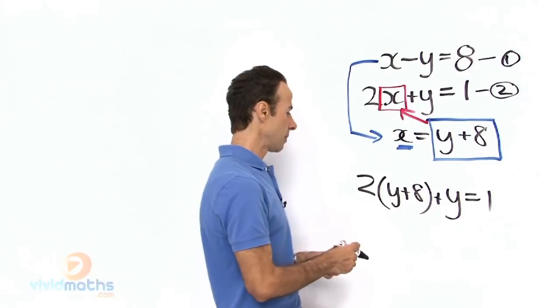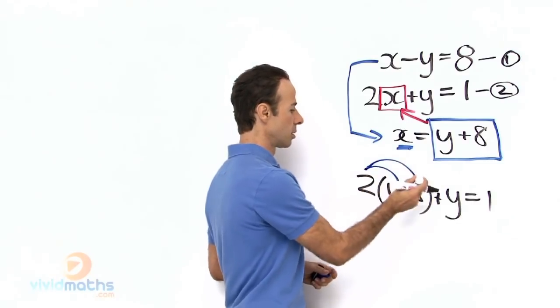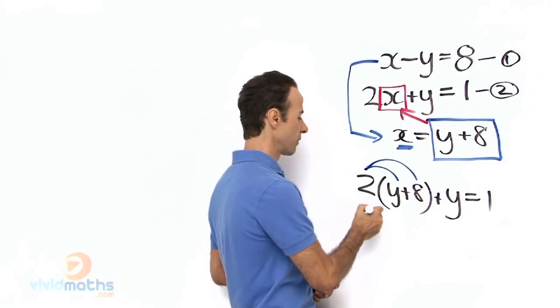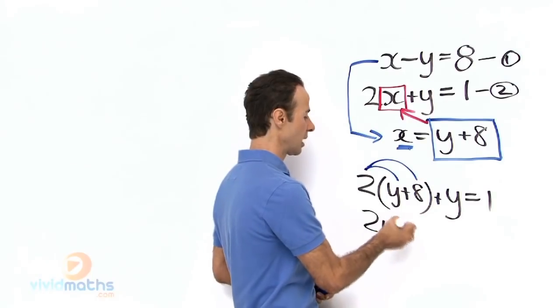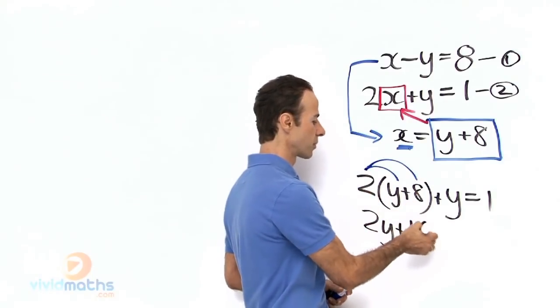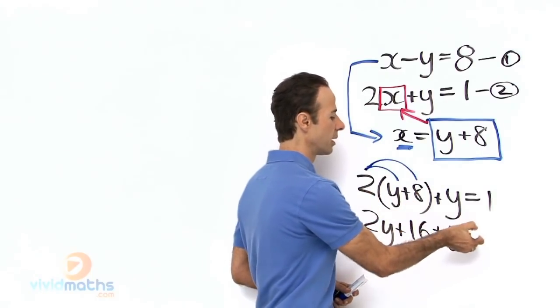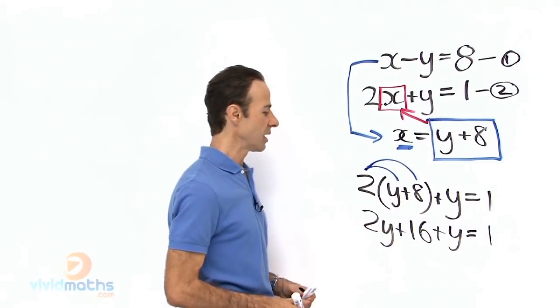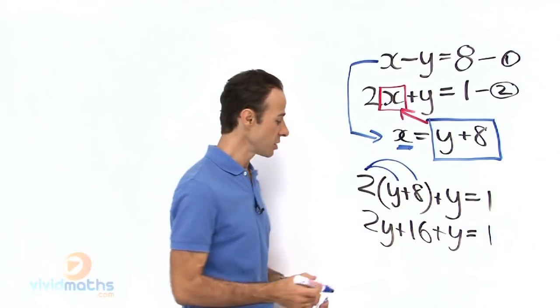Remember with brackets, so we have 2y plus 2 times 8 is 16 plus y equals 1. So let us collect like terms.